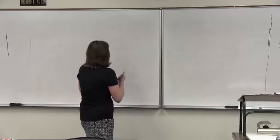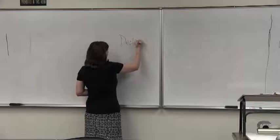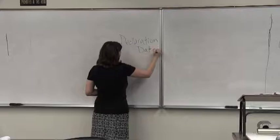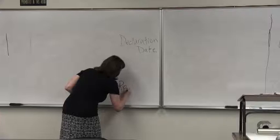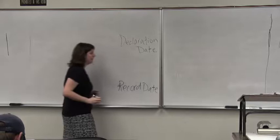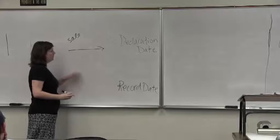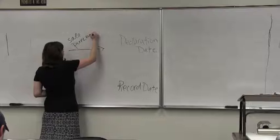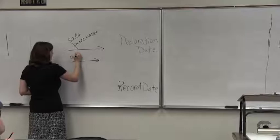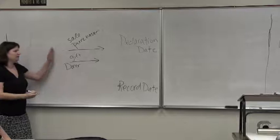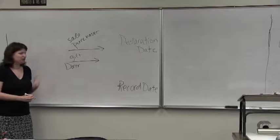We are going to get started for today. You will remember last time we were talking about dividends — we talked about the declaration date and the record date. If there's a sale of shares between the declaration day and the record date, the purchaser pays the taxes. If there's a gift between those dates, the donor pays the taxes — different tax rules depending upon the kind of transaction.